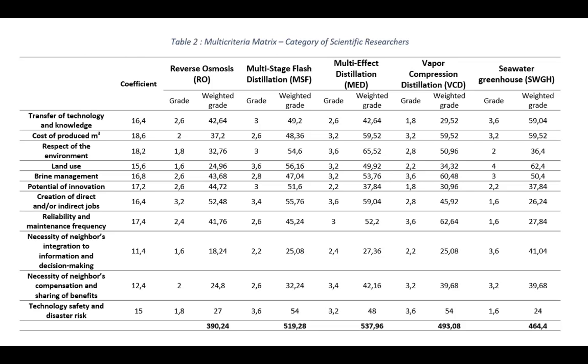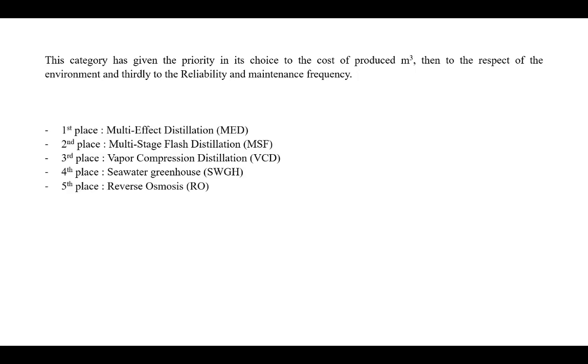The multi-criteria matrix relating to the category of scientists and researchers is presented in this table. This category has given priority in its choice to the cost of produced cubic meter, then to the respect of the environment, and thirdly to the reliability and maintenance of water. Referring to the weighted final scores, this category has drawn the following ranking scenario of water desalination processes.